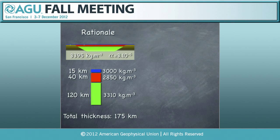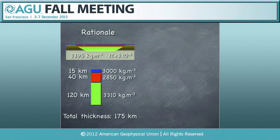Let's consider an oceanic plateau standing on a convective mantle. The total thickness is 175 kilometers — made of 120 kilometers of depleted mantle with a density of 3310 kg/m³. That depletion has produced 30–40% melt, which produced the oceanic plateau, made of mafic granulites. The oceanic plateau differentiates itself, with a lot of production of TTG. Above, we have a typical greenstone cover that has been weathered under oceanic conditions.